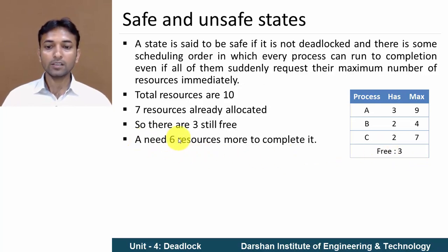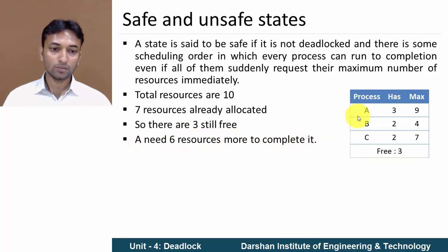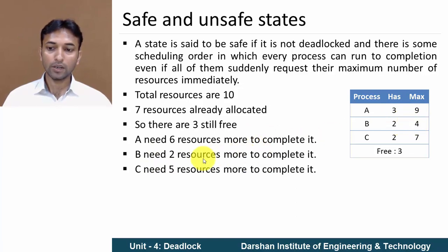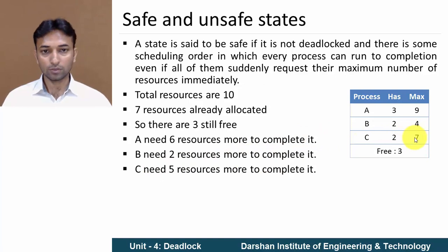Now, A needs 6 more resources to complete its execution (9 minus 3). B still requires 2 more resources, and C still requires 5 more resources to complete its execution.